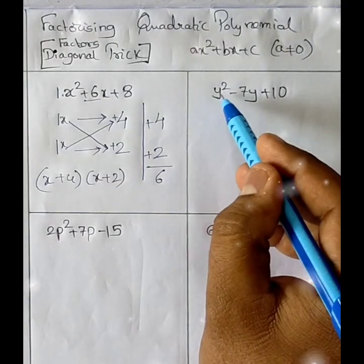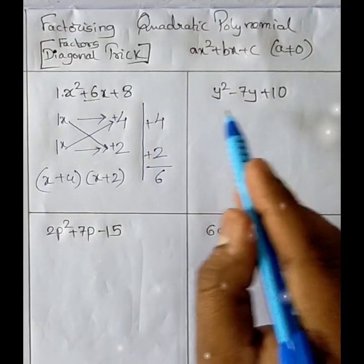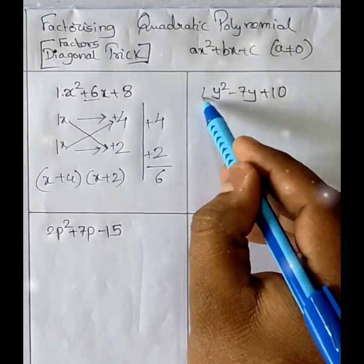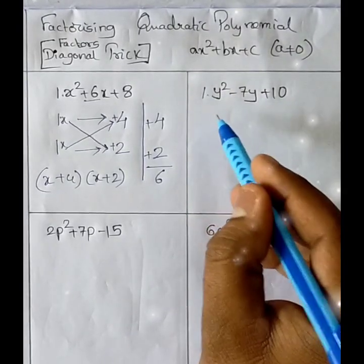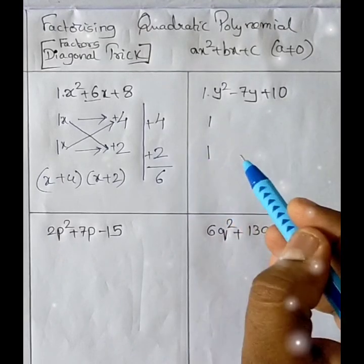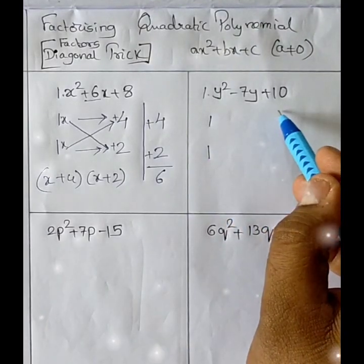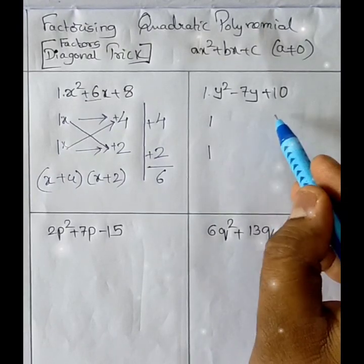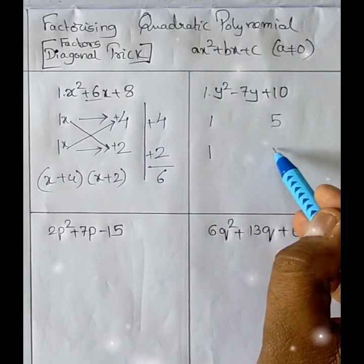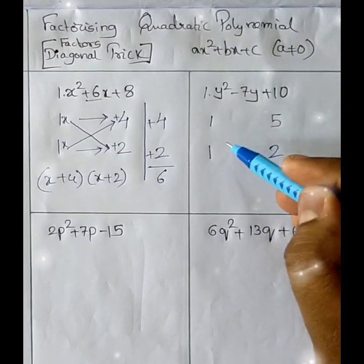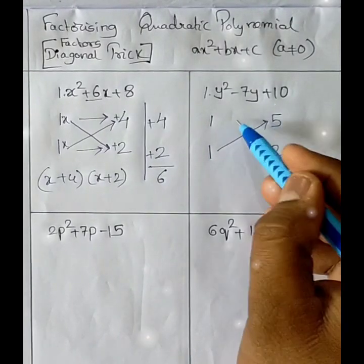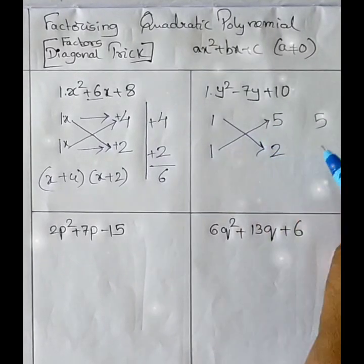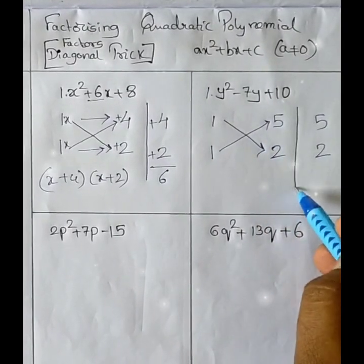Let us go for the next one — a quadratic polynomial in y. The coefficient of y² is 1, so the factors are 1×1. Next we go for 10. The factors of 10 are 1×10 and 5×2. I am taking 5 and 2, writing the bigger factor on top, and multiplying diagonally: 1×5 = 5 and 1×2 = 2.